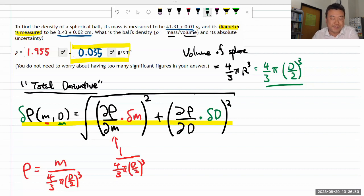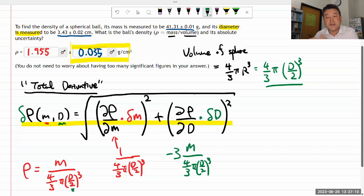I also need the derivative of density with respect to d. I'm going to have to use chain rule—it'll be a great opportunity to review the chain rule. Taking the derivative of the outside, which would give me -3m / (4/3 π (d/2)³).